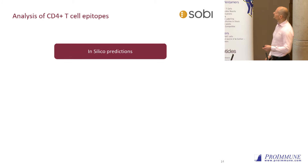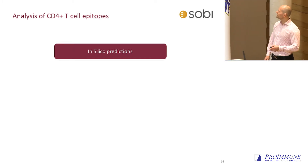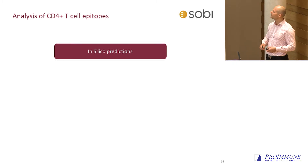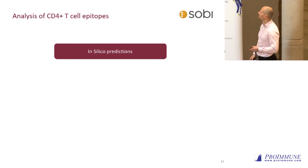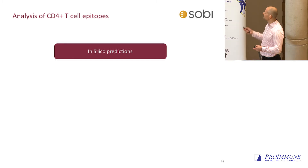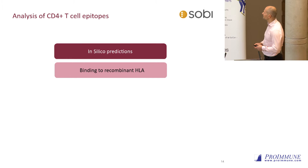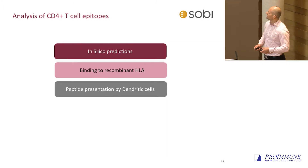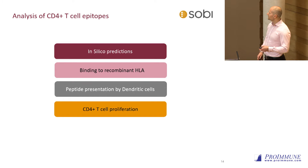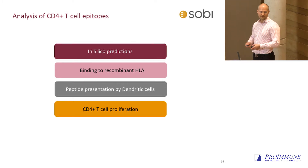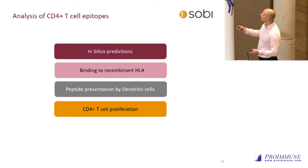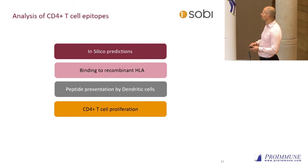How do we analyze the CD4 T-cell epitopes? We usually do in silico predictions first, because if we have a large set of candidates, it's very expensive to do the more cell-based assays. Then we look at binding to recombinant HLAs. We do look at peptide presentation by dendritic cells using the ProPresent assay. We look at CD4 T-cell proliferation, either using the DCT assay with full-length protein, or using synthesized peptides, or looking at PBMCs and ELISpots or FluoroSpots.